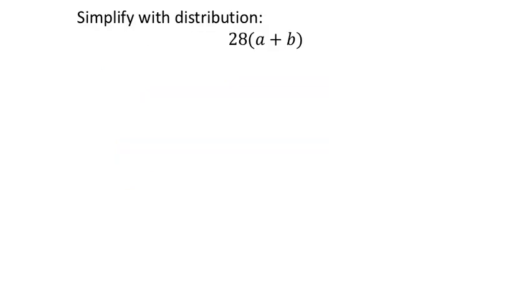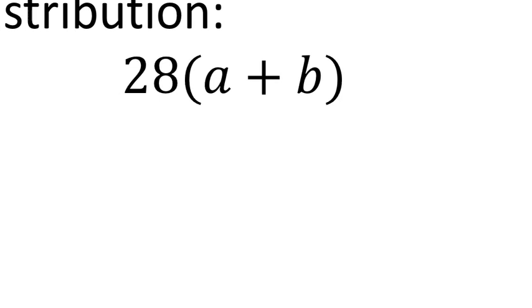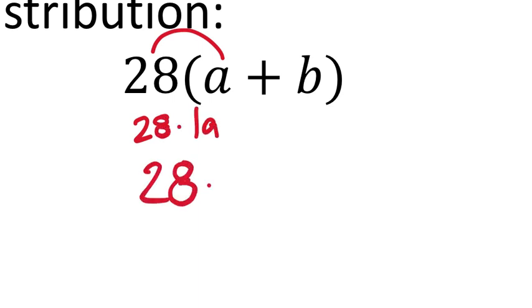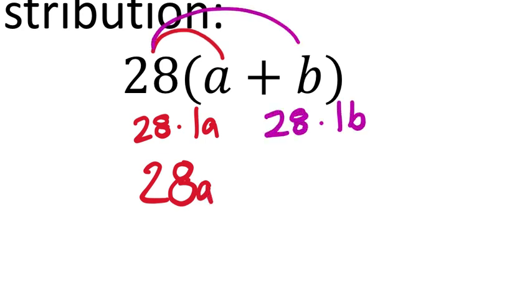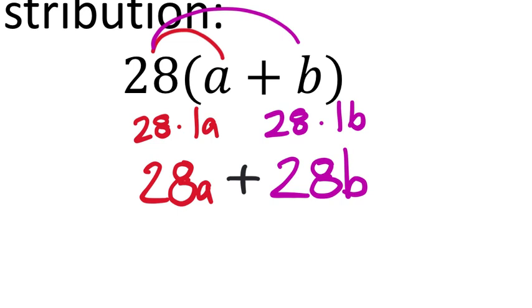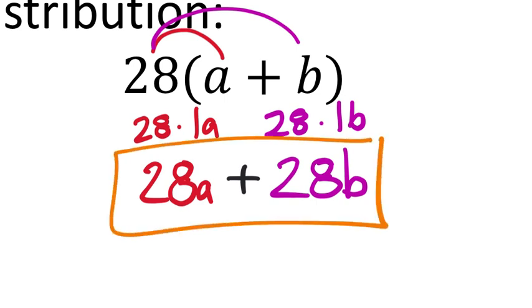Simplify 28(a + b) using distribution: 28 × a = 28a, and 28 × b = 28b. The result is 28a + 28b. The assignment may specify a particular order.